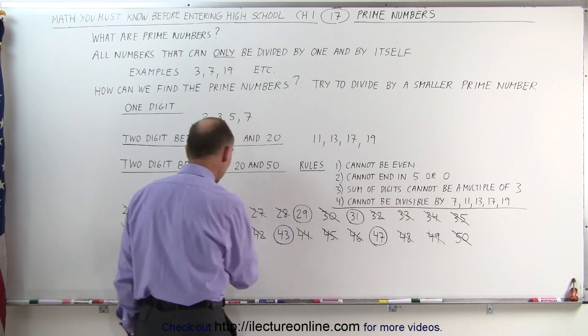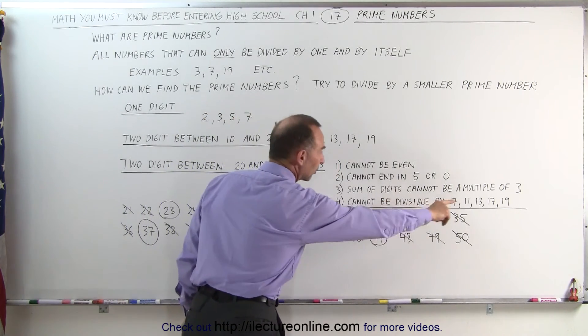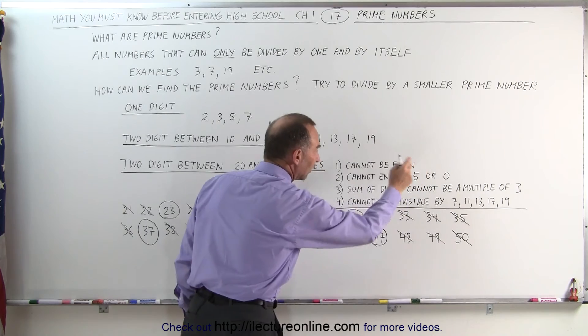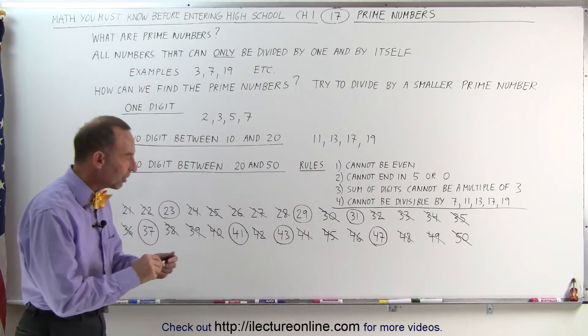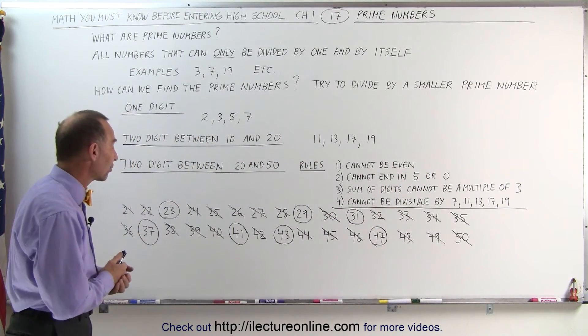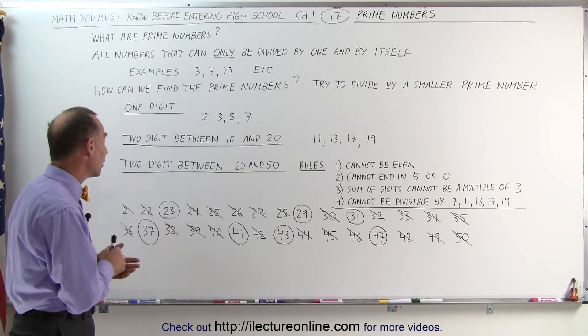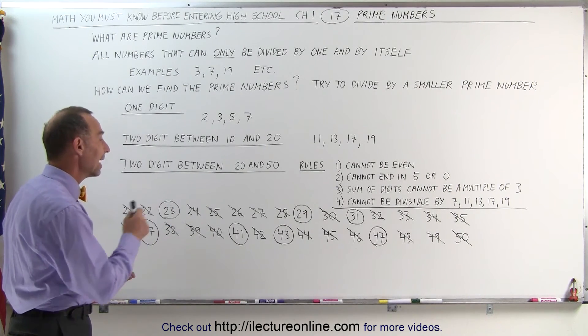You'll find that you cannot divide any of those numbers circled by any of the numbers listed. They do not end in a 0 or 5. They're not even, and they cannot be divided by 3. So those are the only prime numbers between the numbers 20 and 50.